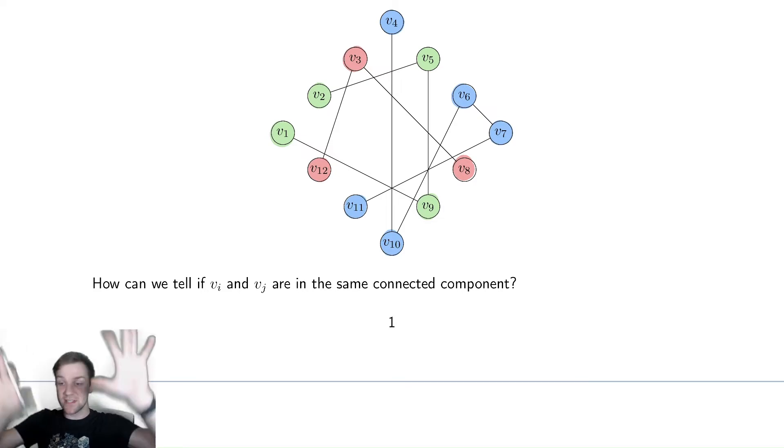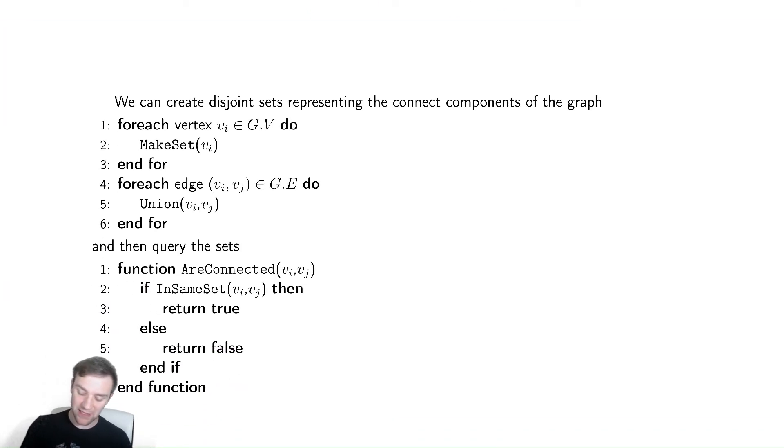We're going to start by making every single element into its own set, and then slowly combining those sets to form the proper disjoint sets for our application. Without me telling you the runtime, we can't really analyze this code, so that's why we don't have it as a function.